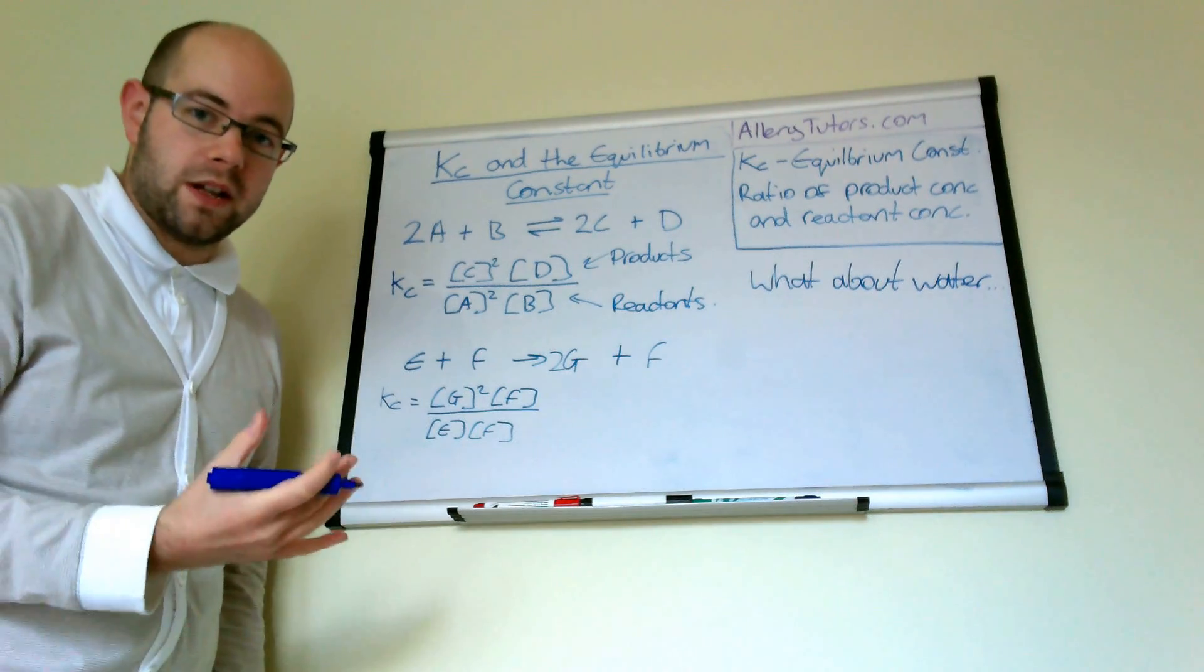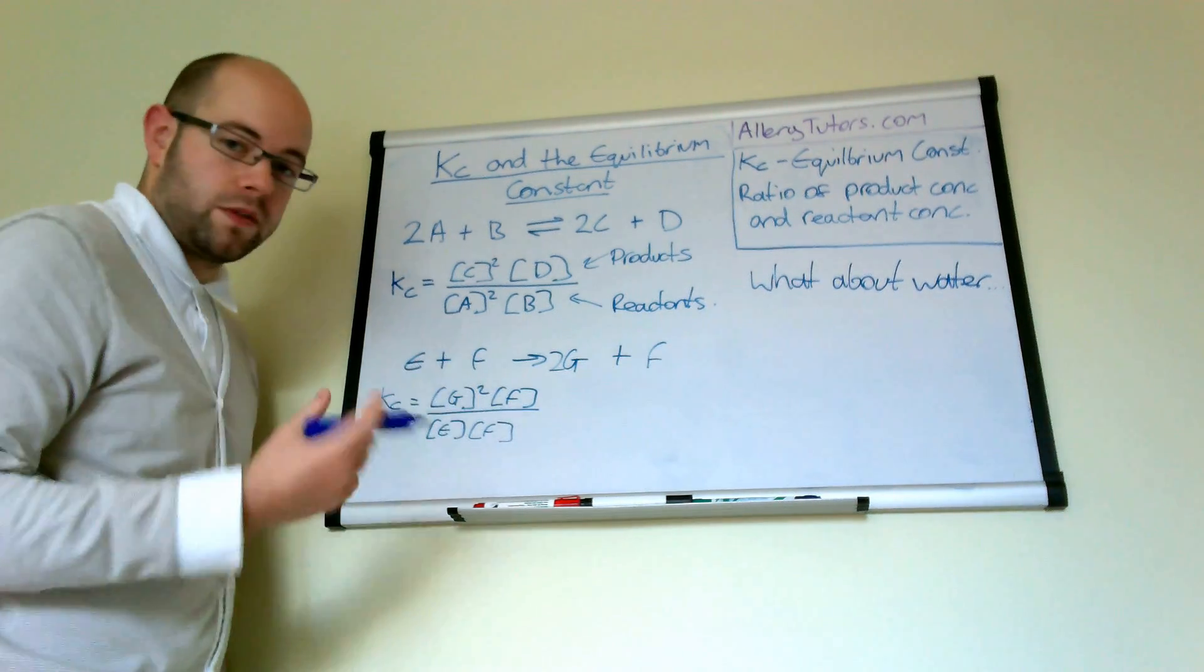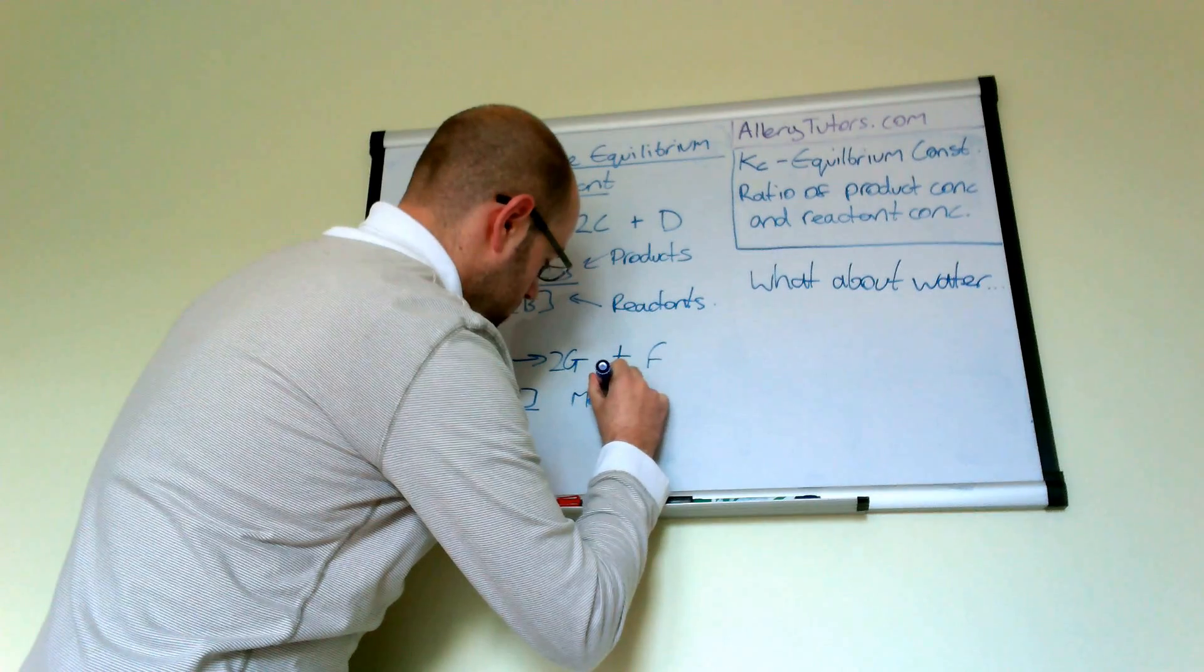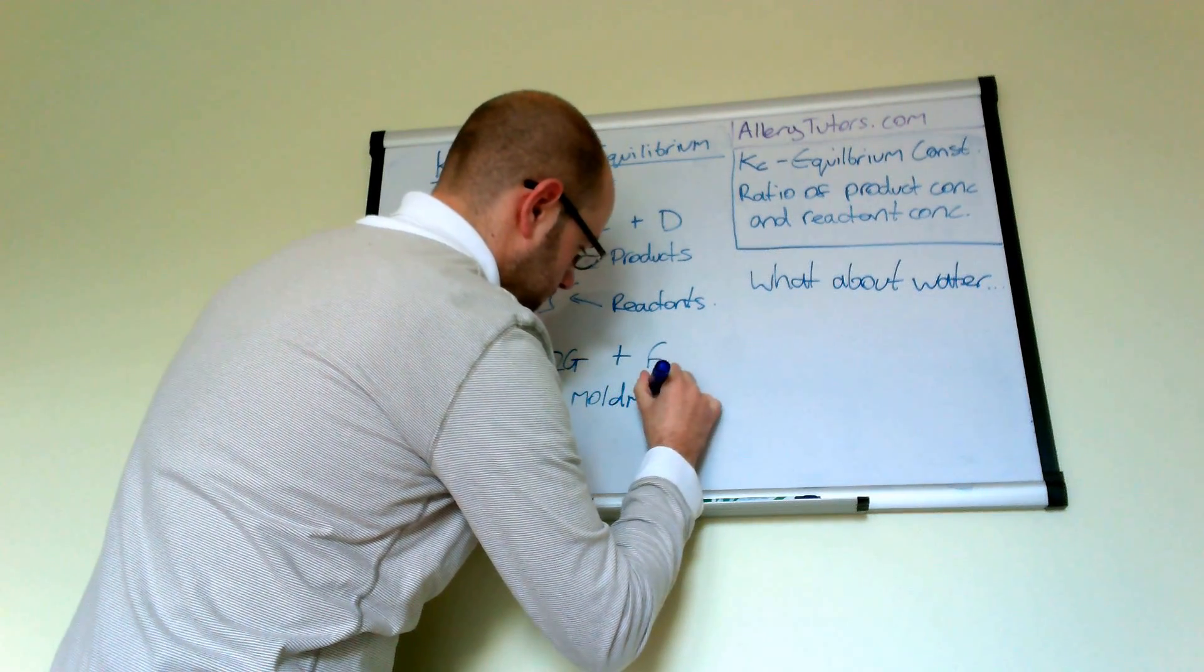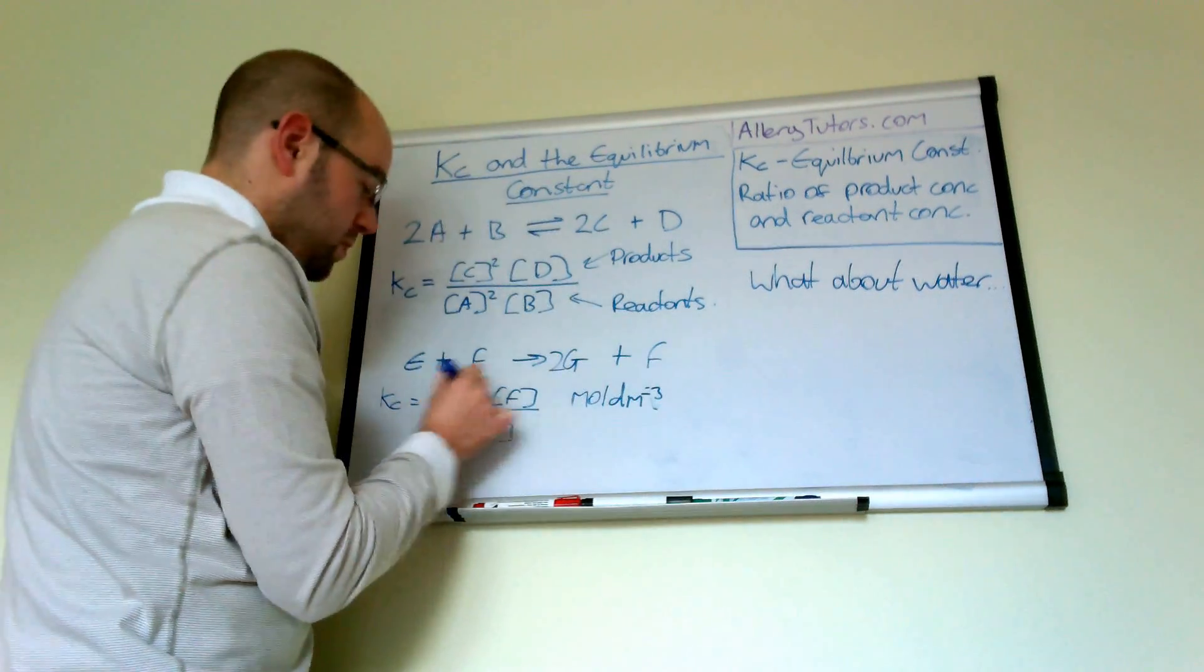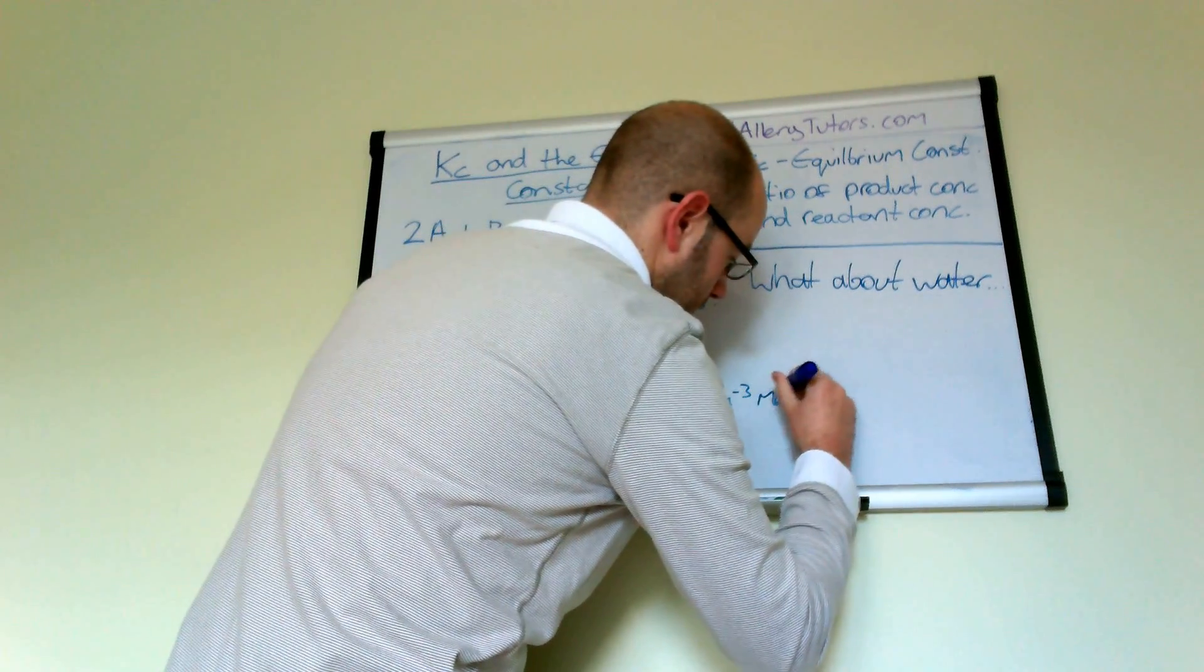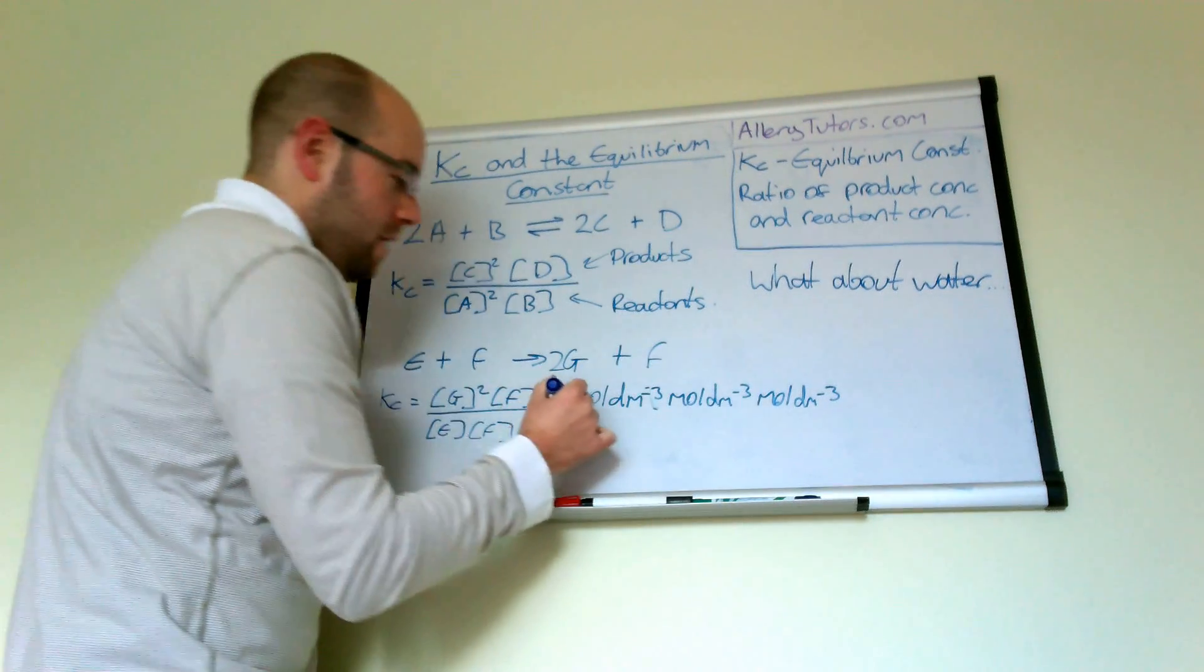Now if we had to work out units of KC then all we do is you'd write down the units of concentration which is moles per dm cubed. So we've got two lots of G there so that's moles per dm cubed. This goes on there. Because it's squared we have another moles per dm cubed. And F we've got moles per dm cubed there as well.